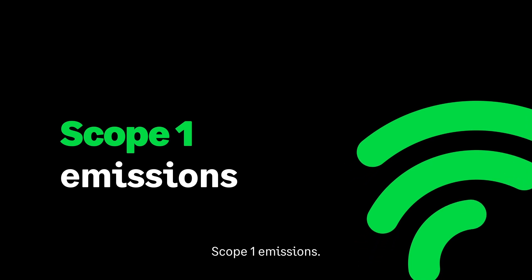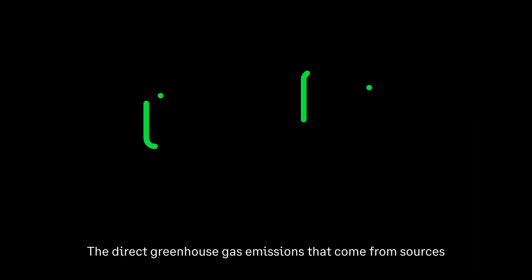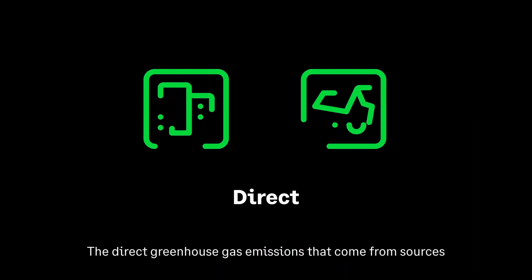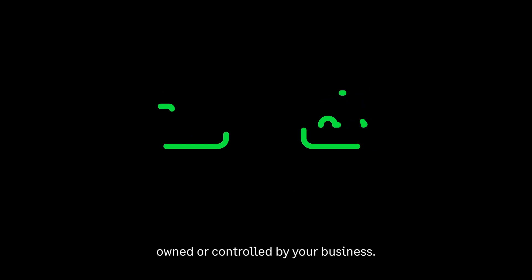Scope 1 Emissions: the direct greenhouse gas emissions that come from sources owned or controlled by your business.